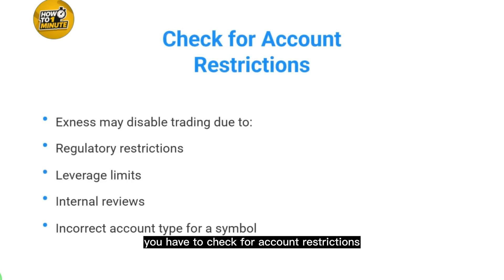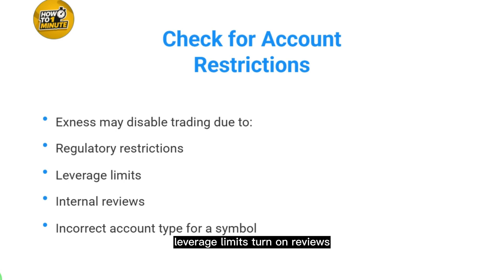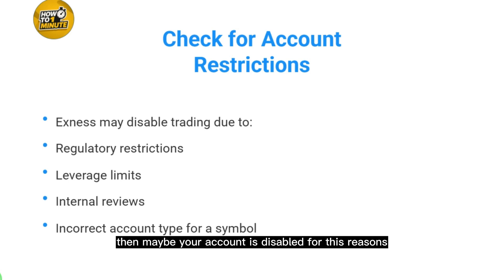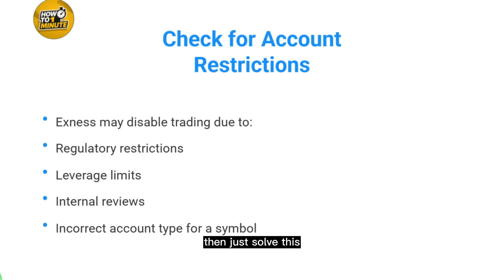After checking the market status, check for account restrictions. Exness may disable trading due to regulatory restrictions, leverage limits, internal reviews, or an incorrect account type for a symbol. If you are facing any of these issues, your account may be disabled for these reasons — go and resolve them.